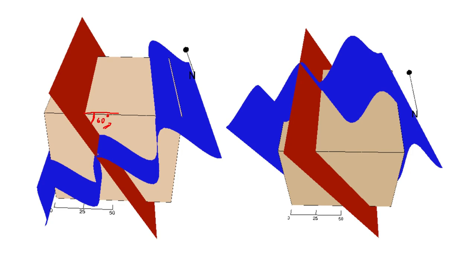Now the other thing we have to do is adjust the pitch. You can see here that the pitch of the fold axis is currently 0 degrees — you have to compare the fold axis with the strike direction. The angle between the strike of the axial plane and the fold axis: in this case they are both parallel, so the pitch is 0 degrees. But we have to make the pitch 90 degrees, so we want the fold axis to be oriented such that this angle is 90 degrees.